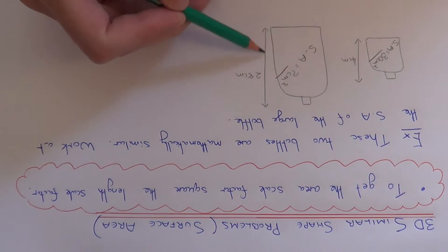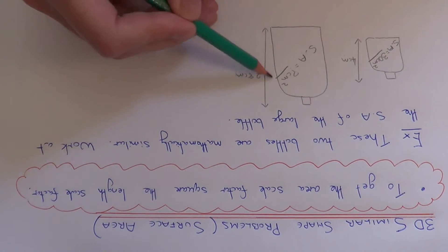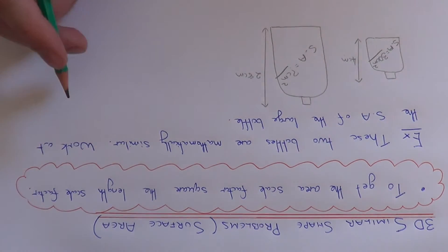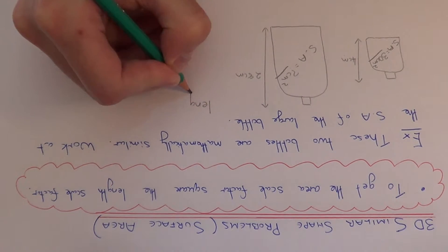The larger bottle has a height of 28cm and we need to figure out the surface area of this larger bottle. So the first thing we have to do is work out our length scale factor.